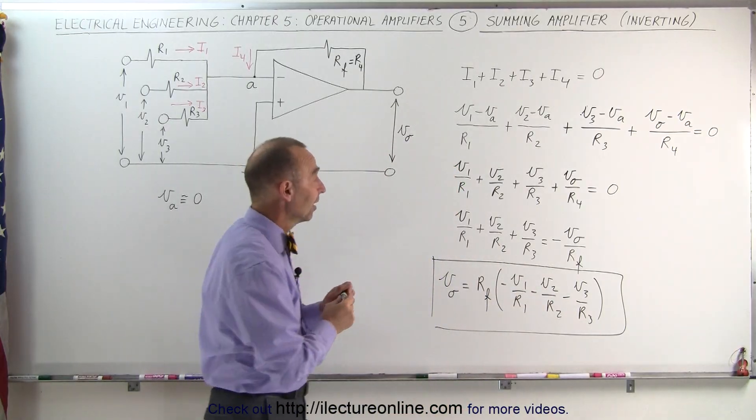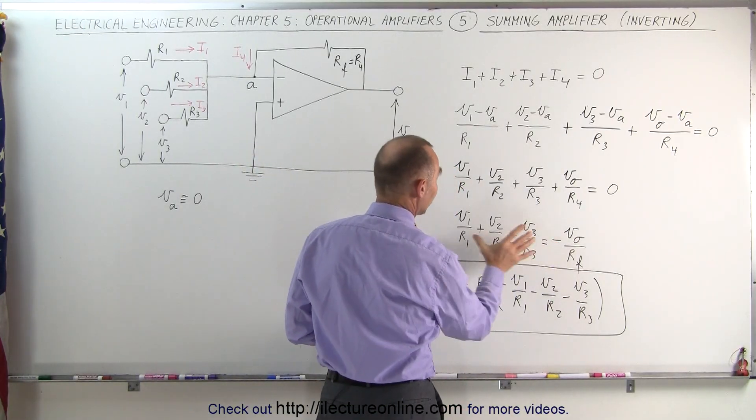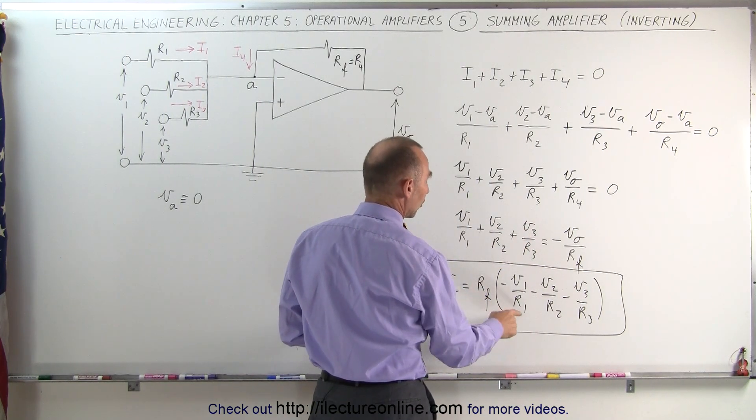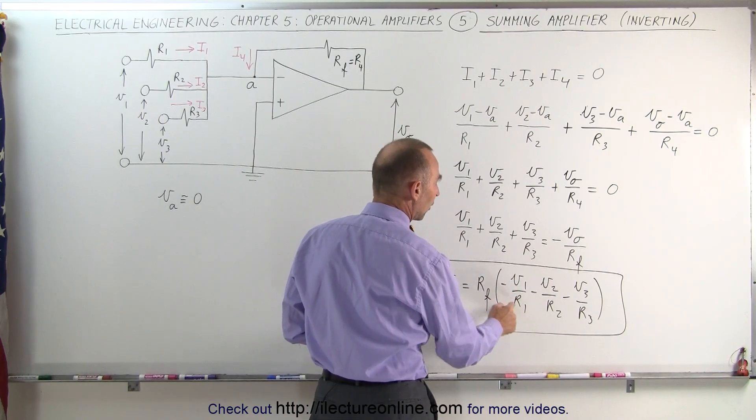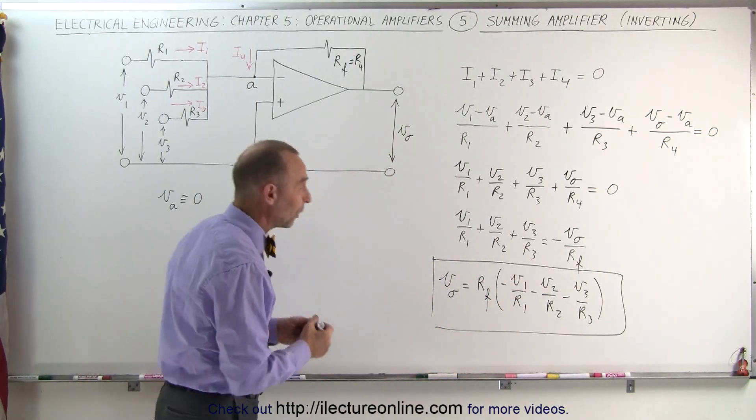Now notice the negative signs because when we made this positive then all these became negative. And notice that there's also the gain factor. The gain factor for each one is R sub F over R sub 1. In other words, we can also write it as follows.